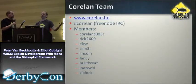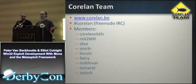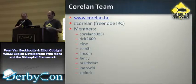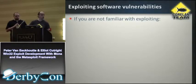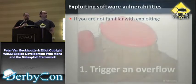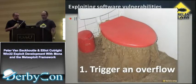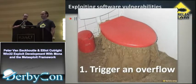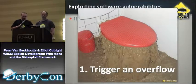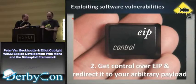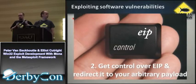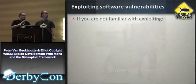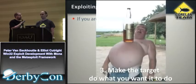So everybody's an expert in here. For those who didn't want to raise their hand — if you're not familiar with exploitation, there are three general steps we're going to talk about. The first being triggering the overflow: we need to make the app crash in some way. Step two is we need to control the IP and redirect it to payload, getting control of the application. And three is making the target do what we want — something special.